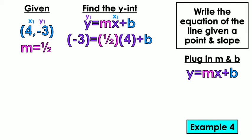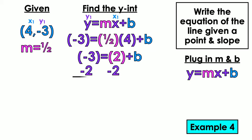Multiply first. What's half of 4? 2. Don't make the fraction complicated. What's half of 4? The half of 4 is 2. That's it. So negative 3 equals 2 plus B. Minus 2 minus 2. Negative 5 equals B. Y equals 1 half X minus 5.